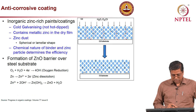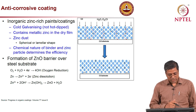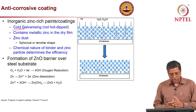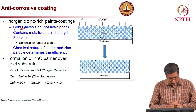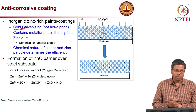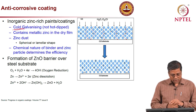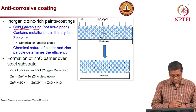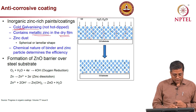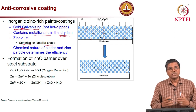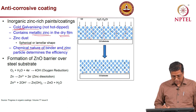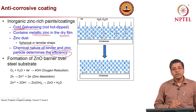Inorganic zinc-rich paints or coatings are available. These are not like galvanized steel with hot dip; instead, this is cold galvanization — the coating is applied at ambient temperature. The material typically contains metallic zinc in the dry film, in spherical or lamellar zinc dust form. The particle shape and the chemical nature of the binder and the zinc particle determine how efficient the coating will be.